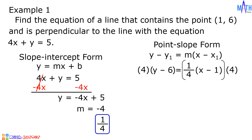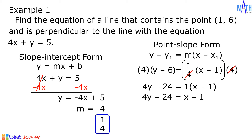Since 1 over 4 is a fraction, let us multiply both sides of the equation by 4. 4 multiplied by y minus 6 equals 4y minus 24. On the right side, 4 multiplied by 1 over 4 times the quantity x minus 1 — cancel out 4 and we are left with 1 times x minus 1. Since 1 multiplied by x minus 1 is equal to x minus 1, then we have 4y minus 24 equals x minus 1.